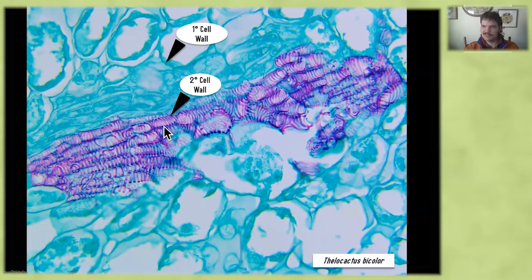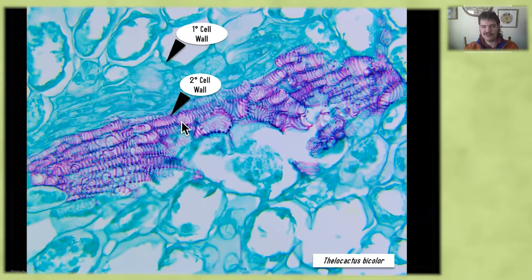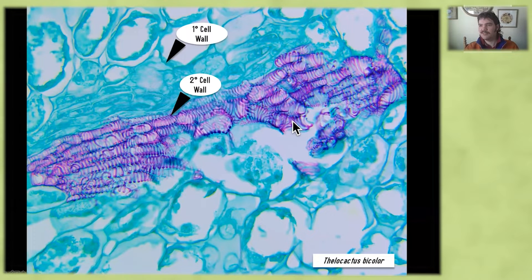Eventually, in some cells, these thickenings will grow together to form a secondary cell wall that evenly covers the entire outside of the cell. Sometimes in cacti where a lot of mechanical strength isn't required, these secondary cell walls will kind of stay in this sort of state.